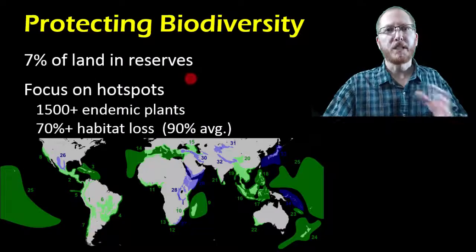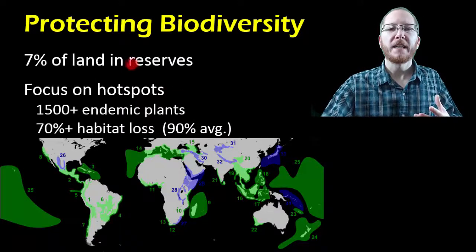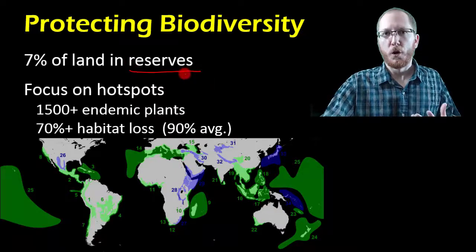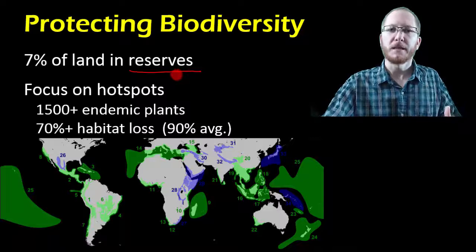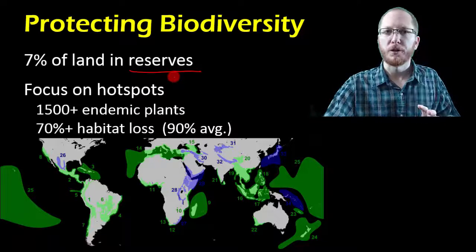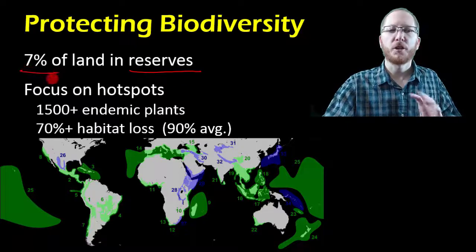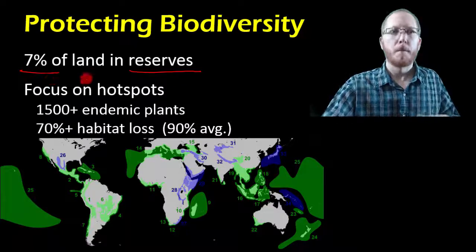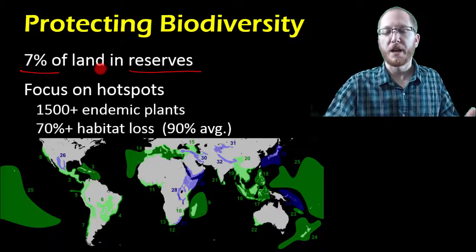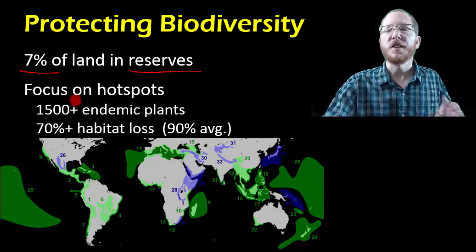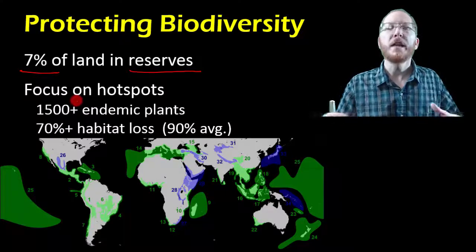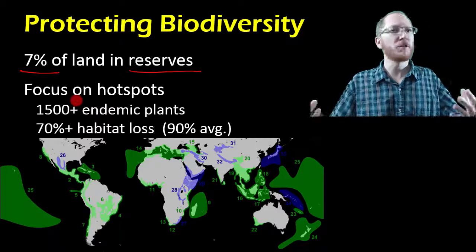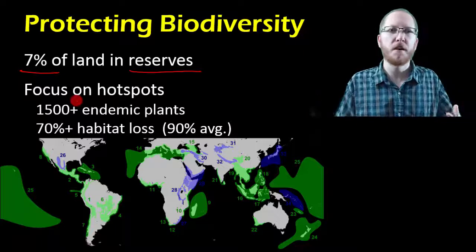One way to protect what we have is to put land into a nature reserve, where we prevent access, prevent industry, and prevent hunting to allow those areas to remain wild. Currently about 7% of the world's land is in a reserve, many through the UN as World Heritage Sites. There's also a focus on trying to protect certain areas, because we know we can't protect everywhere since people still need cities and farmland.